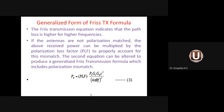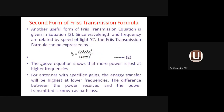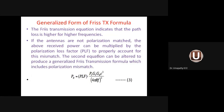The generalized form of the Friis transmission formula accounts for polarization mismatch. The second form doesn't include polarization matching. When the incoming electromagnetic wave polarization and the receiving antenna polarization don't match, the received power should be multiplied by the polarization loss factor (PLF). Equation 3, multiplying Equation 2 by PLF, is the generalized form.